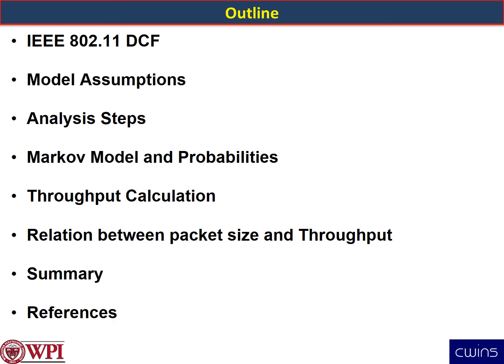This is the outline for the presentation. I'll be talking about a short summary of the IEEE 802.11 Distributed Coordinated Function, then go through the model assumptions that Bianchi made in his paper, his analysis steps, what his Markov model is and what the key probabilities are. I'll then go through the throughput calculation, the relationship between packet size and throughput, and finally provide a summary and references for those interested in reading more.